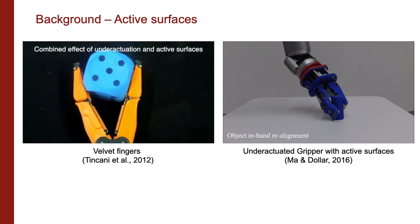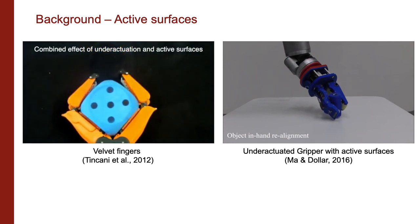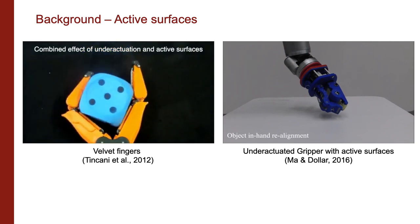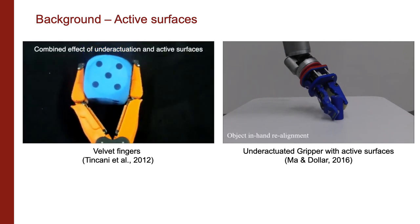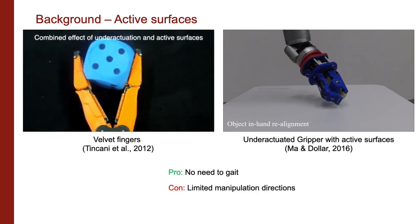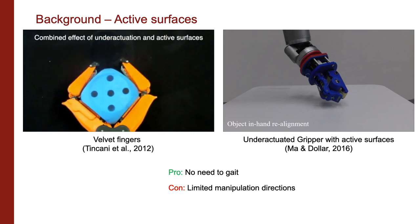On the other hand, researchers have also explored using conveyor surfaces or active surfaces that allow the graspers to manipulate the objects without substantial modification of the grasp pose. In most embodiments, however, the conveyor orientations are fixed, limiting object motion availability.